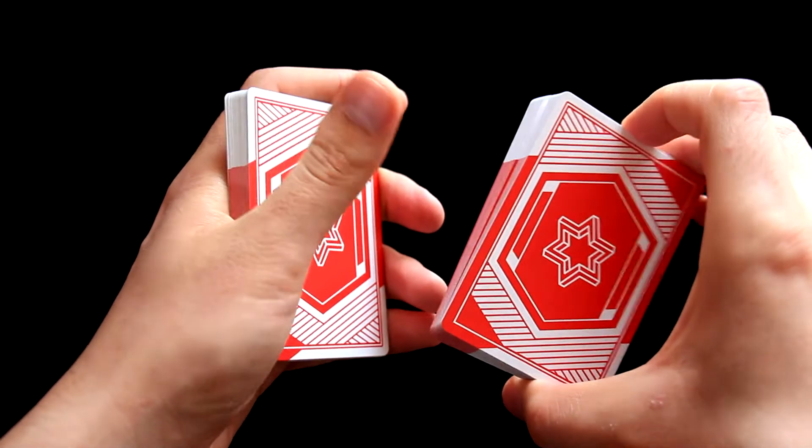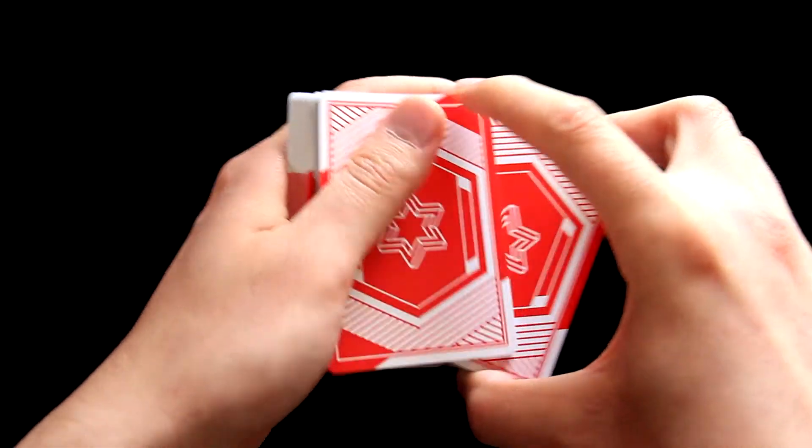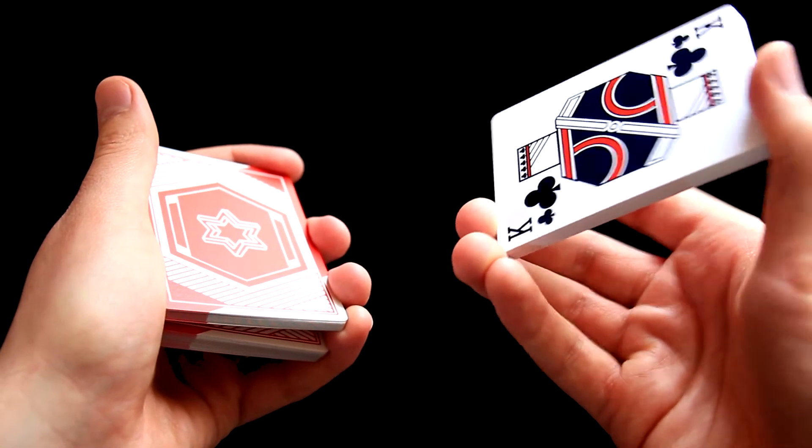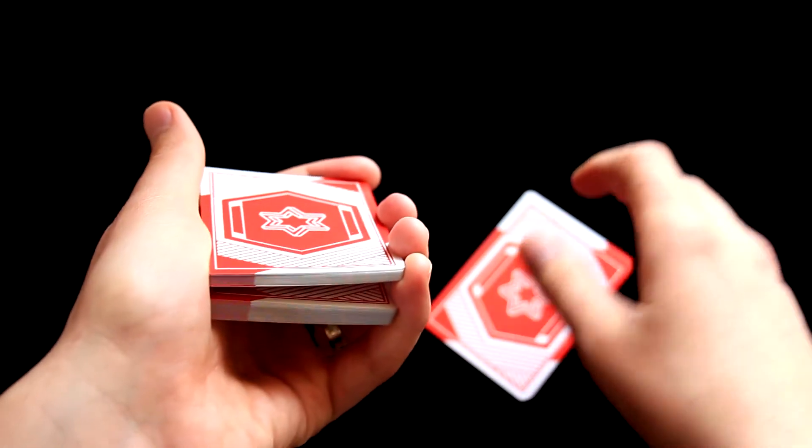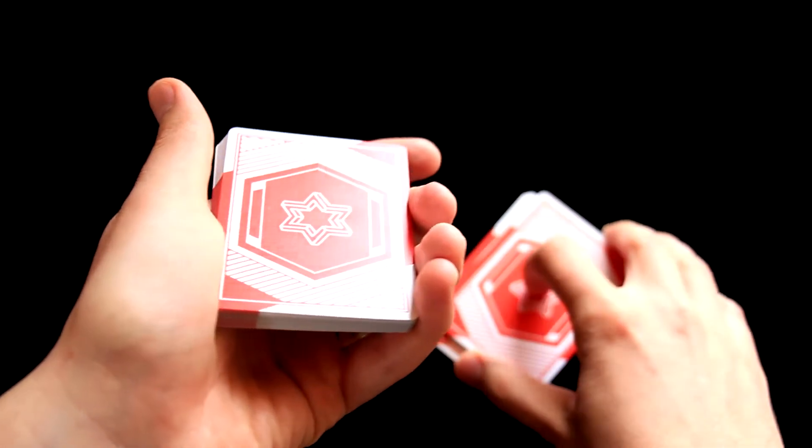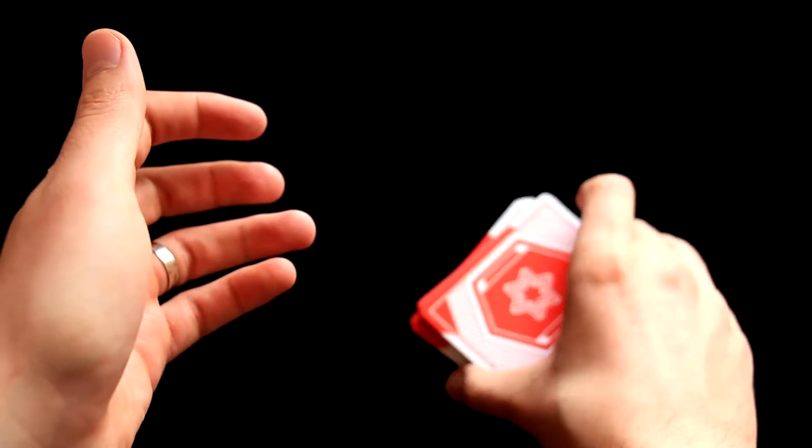Now you will do exactly the same for the second time, but now you will hold a little break with your pinky. You have some cards left in your hand, place them on the table, take everything above the break, place it on the table as well, and place the rest on top like this.